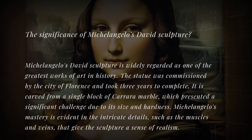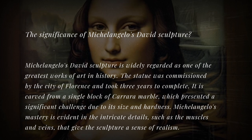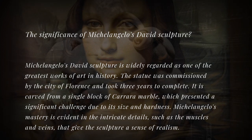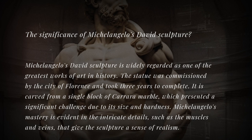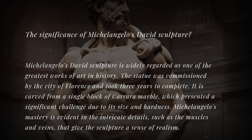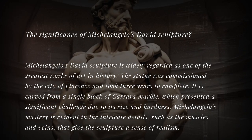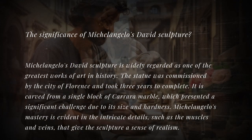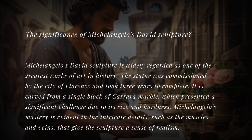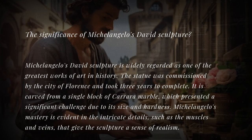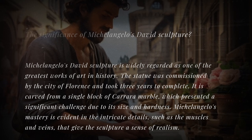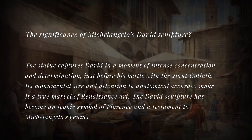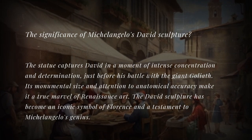What is the significance of Michelangelo's David Sculpture? Michelangelo's David Sculpture is widely regarded as one of the greatest works of art in history. The statue was commissioned by the city of Florence and took three years to complete. It is carved from a single block of Carrara marble, which presented a significant challenge due to its size and hardness. Michelangelo's mastery is evident in the intricate details, such as the muscles and veins, that give the sculpture a sense of realism. The statue captures David in a moment of intense concentration and determination, just before his battle with the giant Goliath.